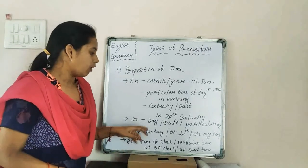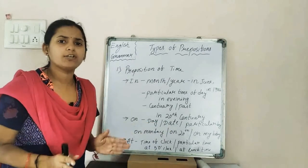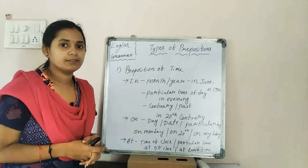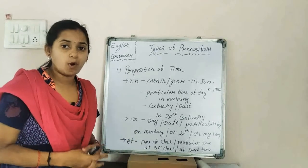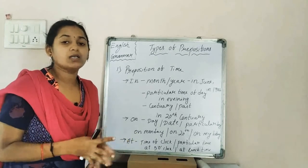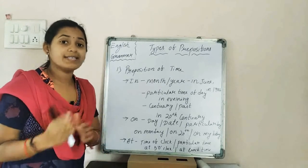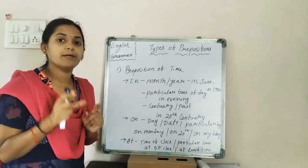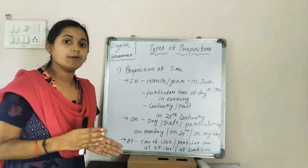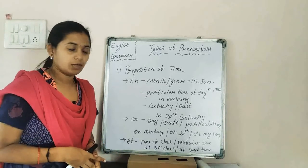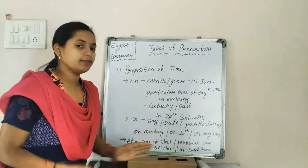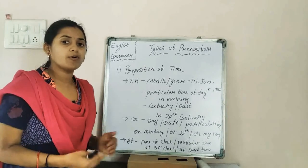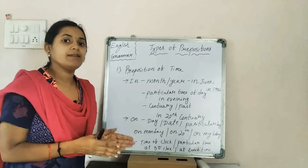We also use 'on' before a particular date — for example, Mahatma Gandhi was born on 2nd October. So when talking about a particular date, we use 'on' before it: on 2nd October, on 28th, on 21st, on 22nd. When talking about date and day, we use 'on.'